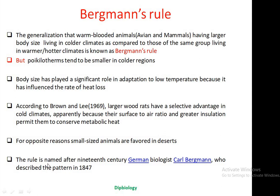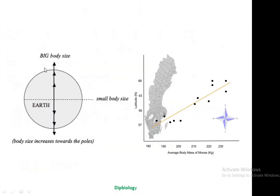The rule is named after the 19th century great biologist Karl Bergmann, who described the patterns of these generalizations in 1847.